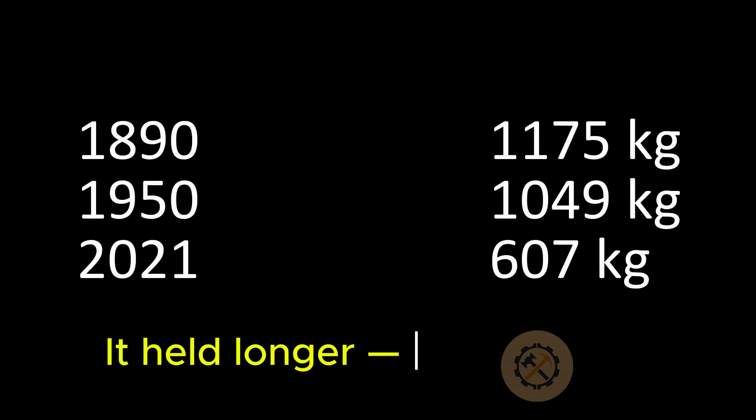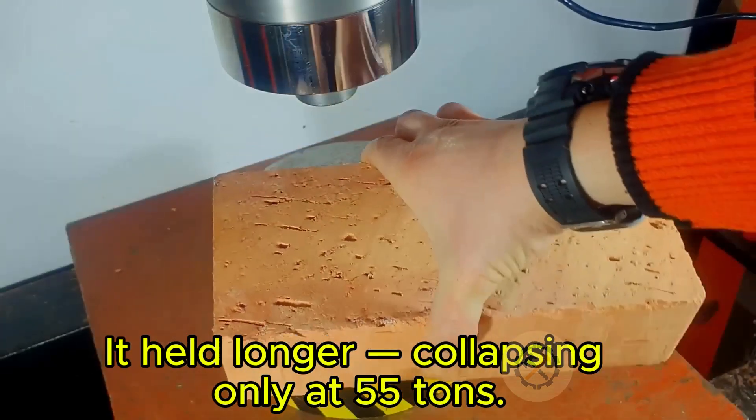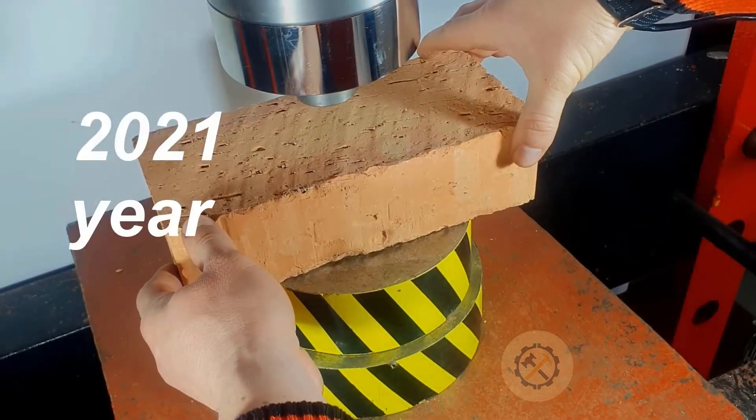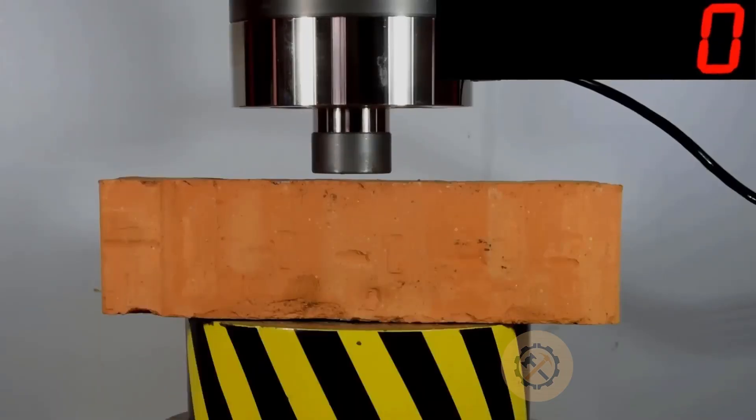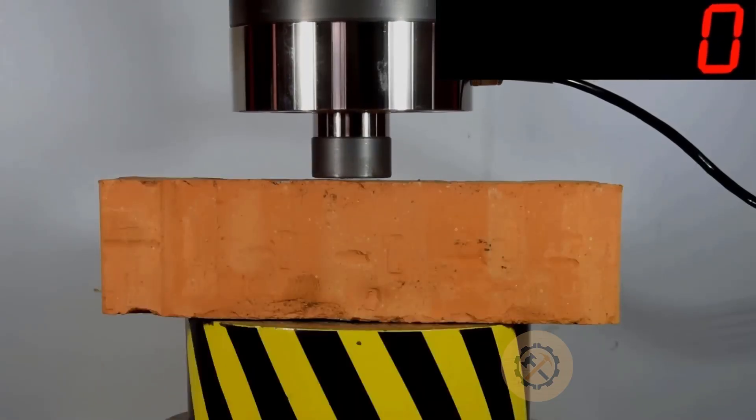Next comes the 150-year-old brick. It appears fragile, with chipped corners and weathered edges. But as pressure is applied, it holds on. The structure resists the force longer than expected.